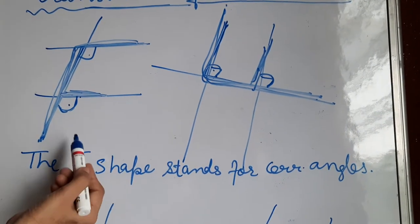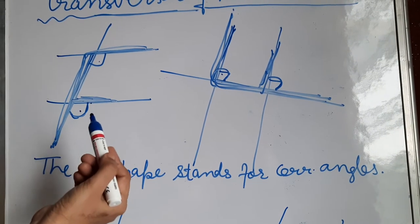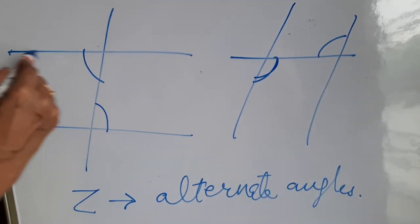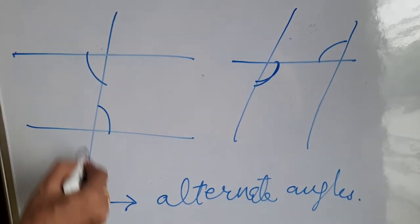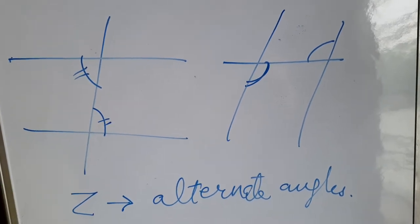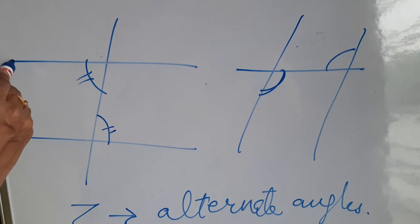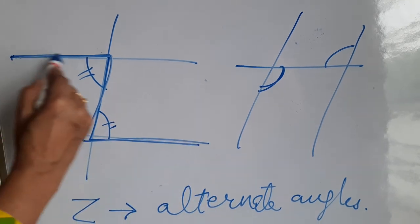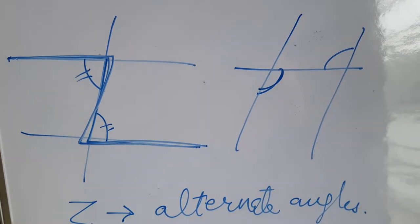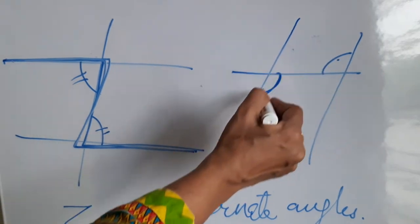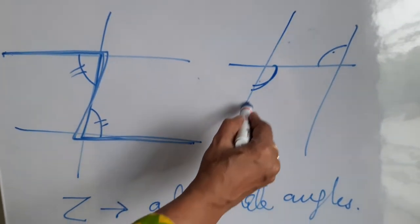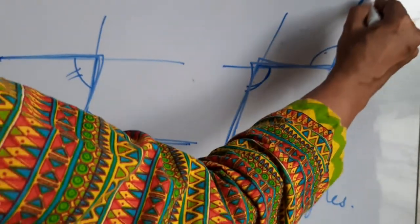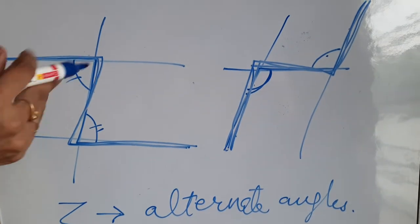For alternate interior angles, use the Z shape. Two parallel lines with a transversal — the alternate interior angles are always between a Z shape. Both pairs of alternate interior angles show a Z shape, so this is an easy way to remember these results.